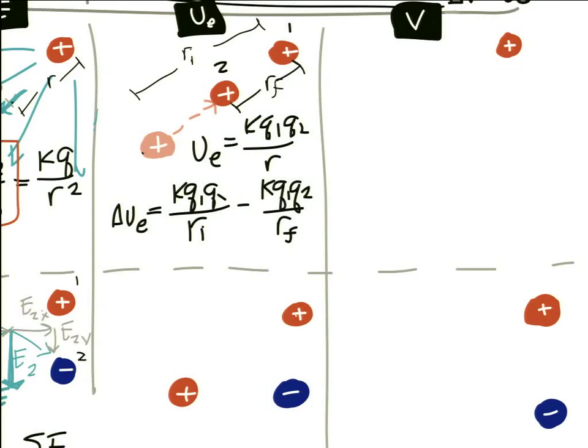This is useful because if you release a particle at one location and want to know its speed at another, you need the difference in potential energy between those two locations, not the absolute value.